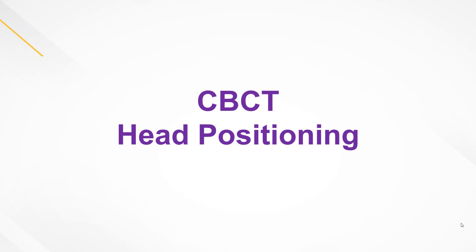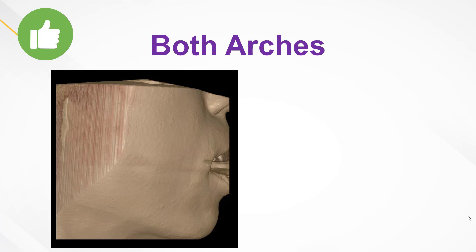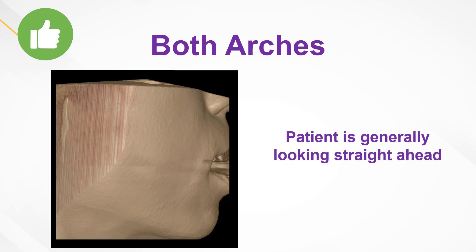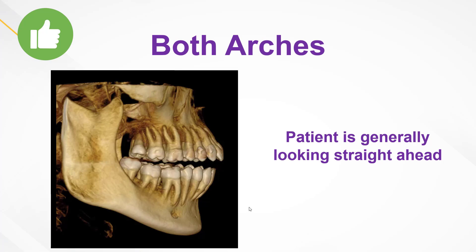Let's talk about head positioning. When positioning the patient, we want the arch being captured to be fairly parallel to the floor. When capturing both arches, I generally instruct the patient to look straight ahead. Here's an example of the patient looking straight ahead and how that translates to what you see on the CBCT. Usually, if the patient is looking straight ahead, the maxillary arch will be fairly parallel to the floor, while the mandibular arch is going to be angled down a little bit due to the curve of Spee. You could have both arches a little more balanced by raising the chin up slightly, but that gets too granular — looking straight ahead is totally fine.